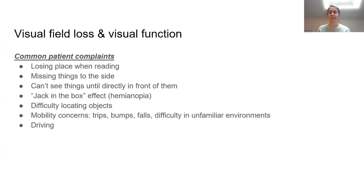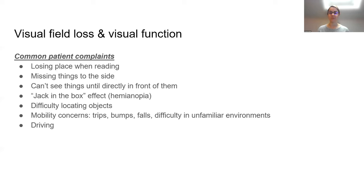In patients with visual field loss, certain complaints are more common. Patients might report that they often lose their place when reading, or miss things off to the side where they have to move their eyes around to find objects. They might say they can't see things until they're directly in front of them. This can translate into a jack-in-the-box effect, especially in patients with hemianopia, where something off to the side suddenly pops into their view and they need to respond to it.